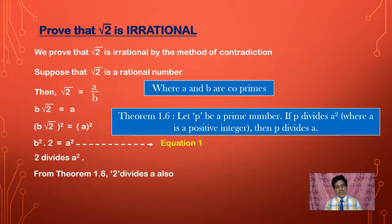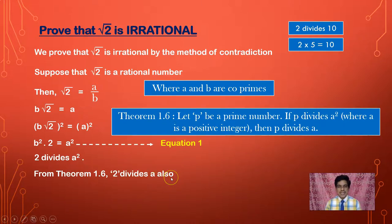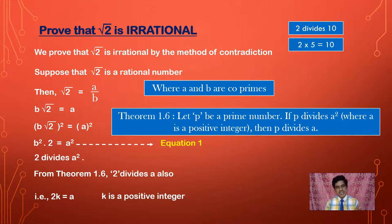So since 2 divides A, that means 2 multiplied by some positive integer gives us A. I will take an example: if 2 divides 10, then 2 into 5 equals 10. Similarly here, 2 multiplied by some integer K equals A. So I have taken 2K is equal to A, where K is a positive integer. We are proving that square root of 2 is irrational by contradiction — we started in the opposite direction by assuming square root of 2 is rational.